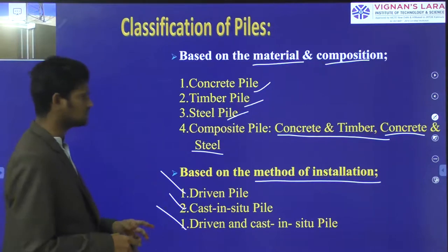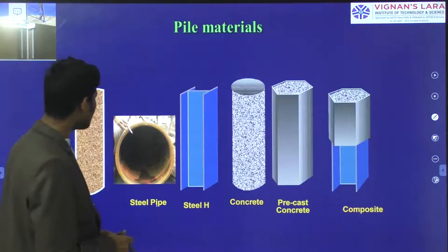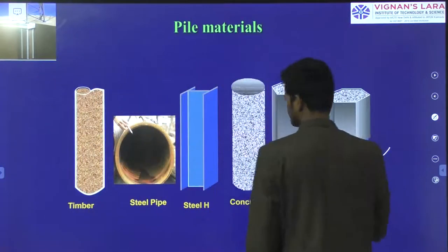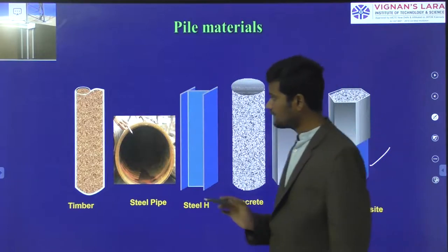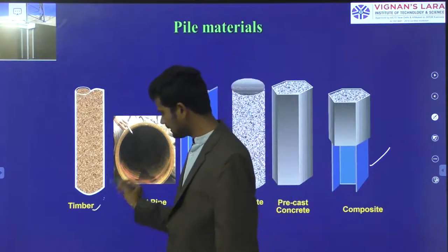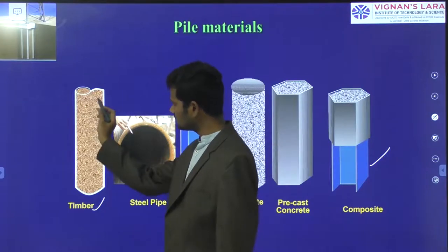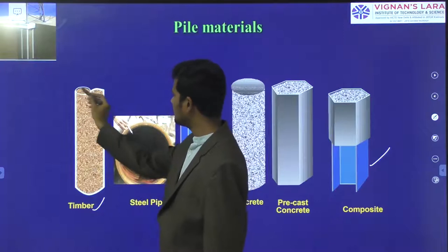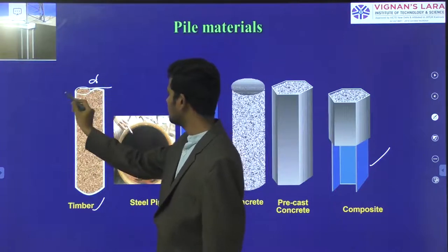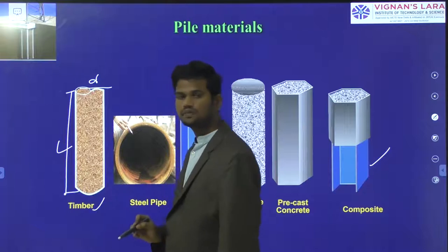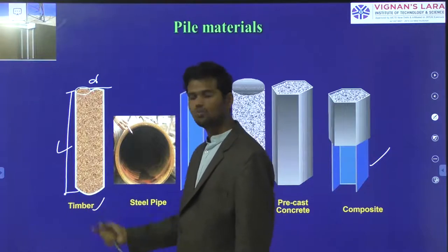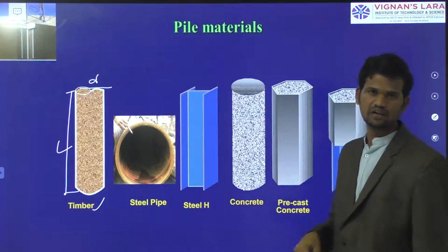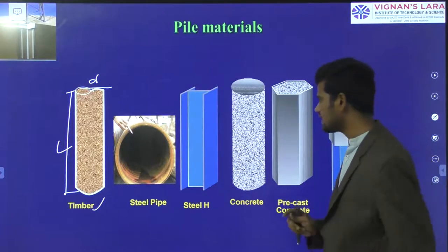Each individual classification we will now see. These are the different types of pile foundation based on material classification. This is the timber pile — this is the cross-sectional diameter of the pile, and this is the length of the pile. At the lower end, we provide some sharpness to easily enter and penetrate into the underground soil mass.